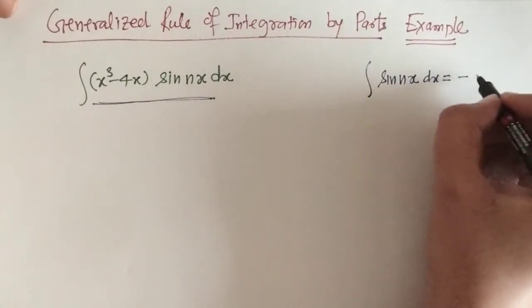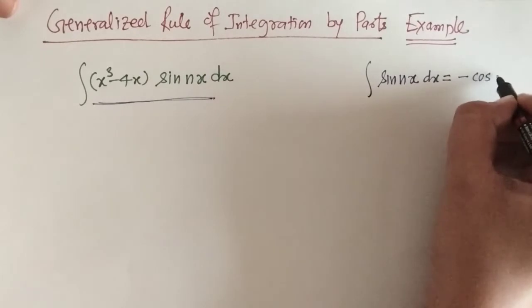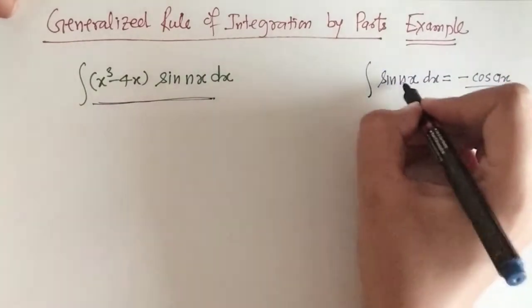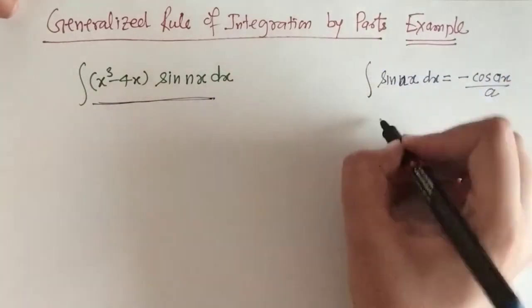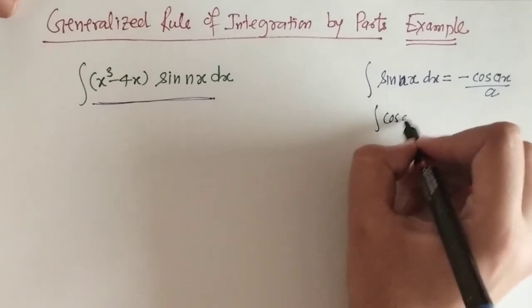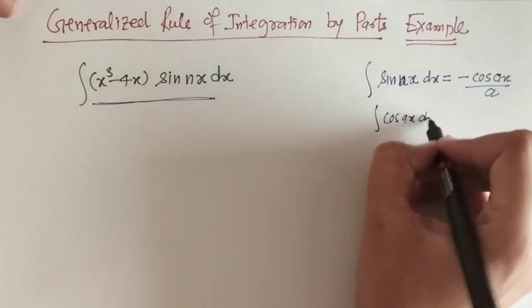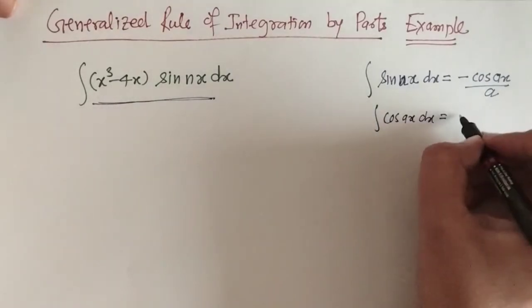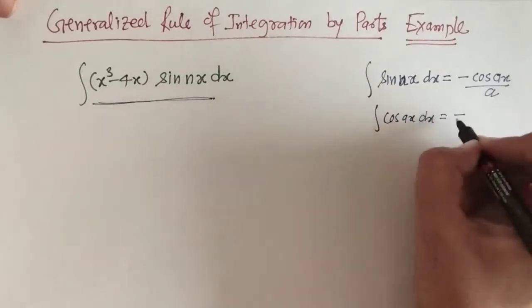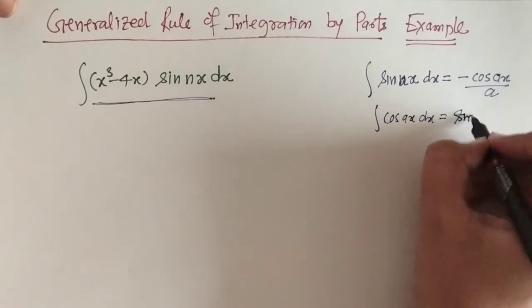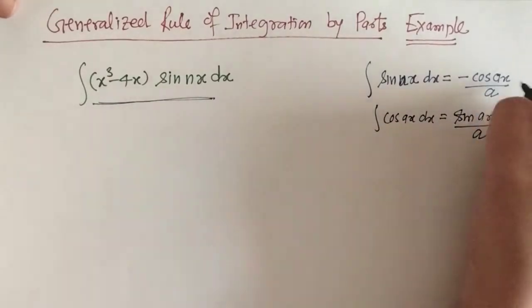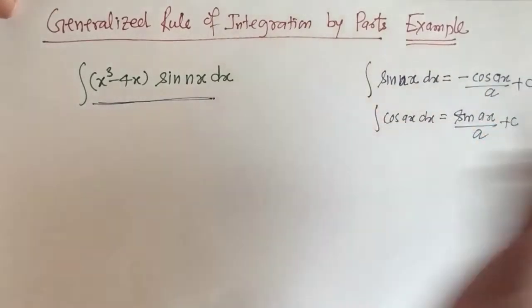The sine integral is minus cos(ax) upon a, and the cosine integral is sin(ax) upon a, plus the constant c.